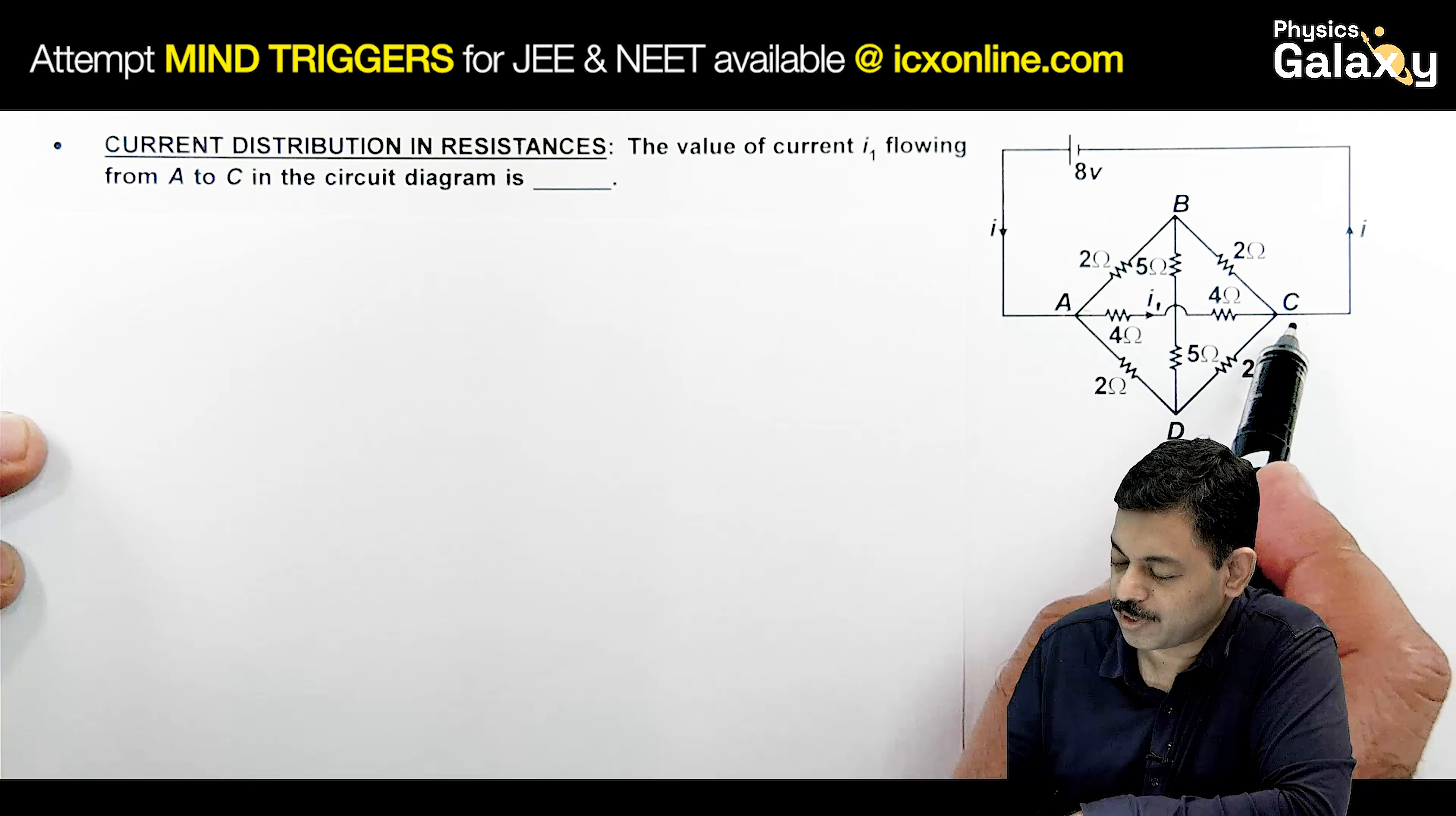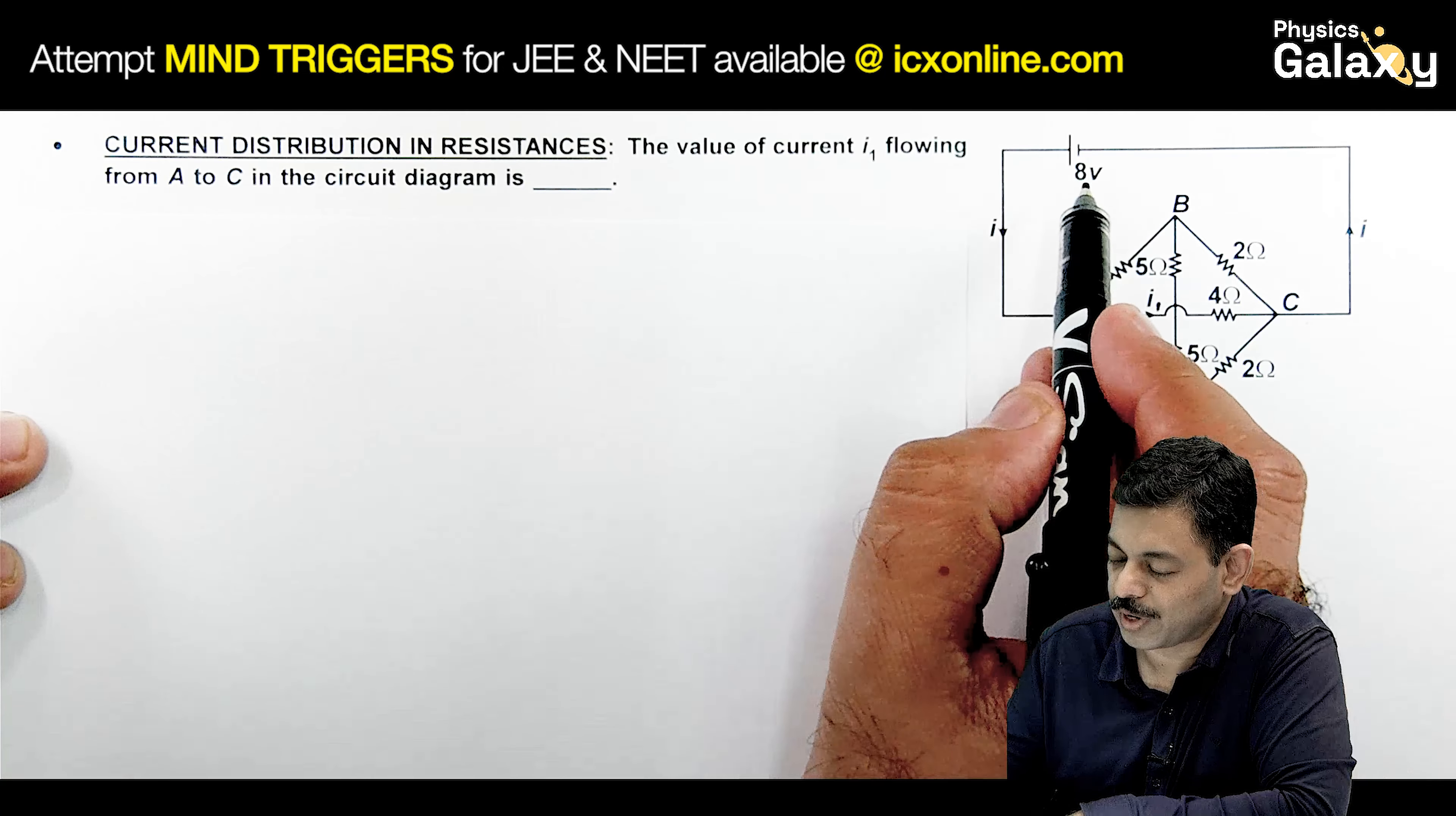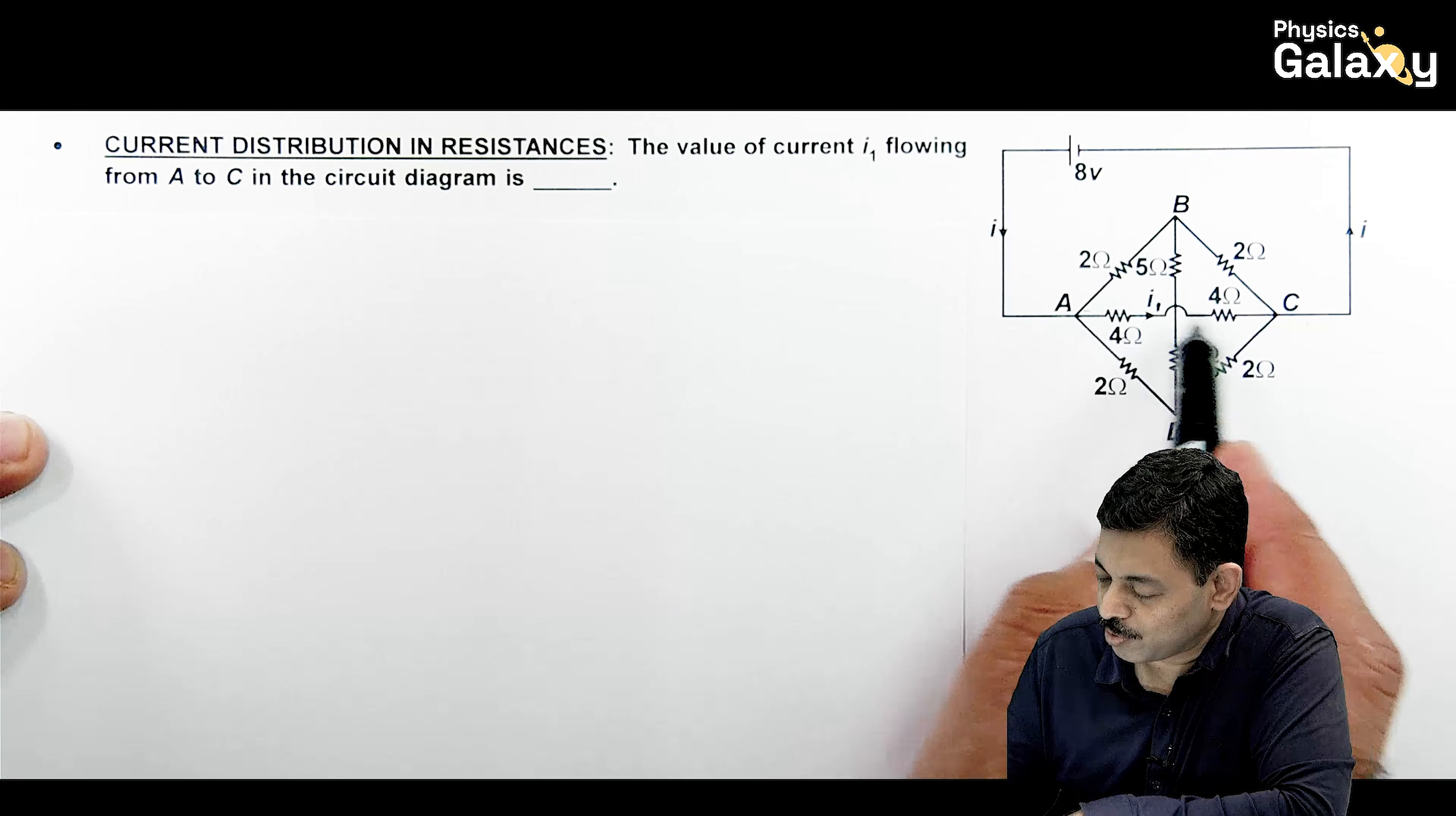Once again, we will be talking about current distribution in resistances. Here, it is asking the value of current I1 flowing from A to C in the circuit diagram. If you look at the resistances, it is an 8 volt battery connected.